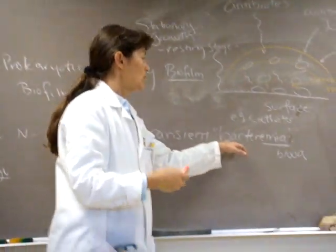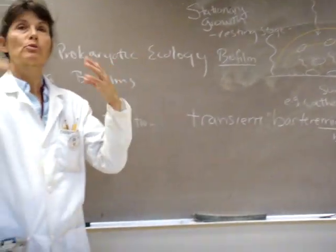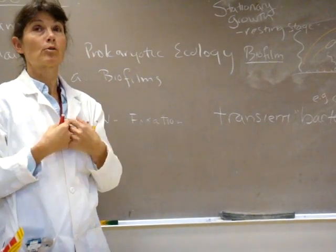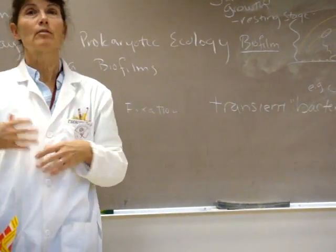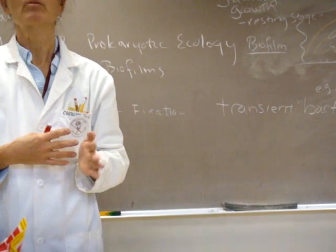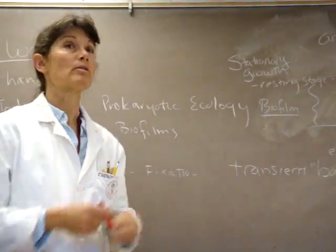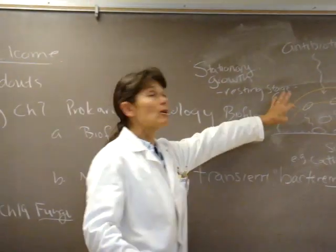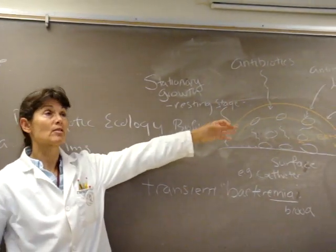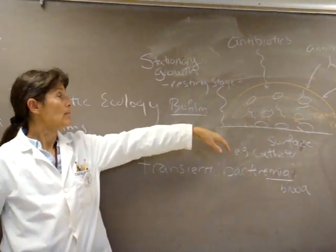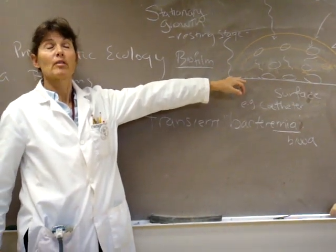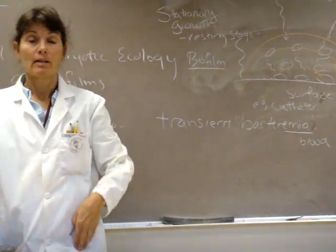So we have little transient, short-term, little oral bacteria that get into our bloodstream. Now, normally, they'll be quickly destroyed by antimicrobial substances and phagocytic cells in our bloodstream. But if they encounter one of these abnormal surfaces or damaged tissue, they can start forming that biofilm, and then it's very difficult for them to be treated.